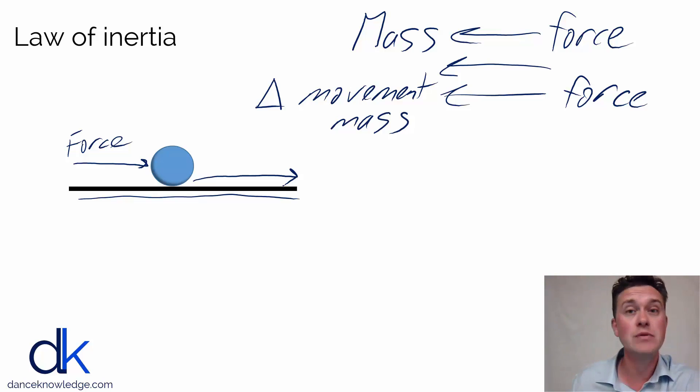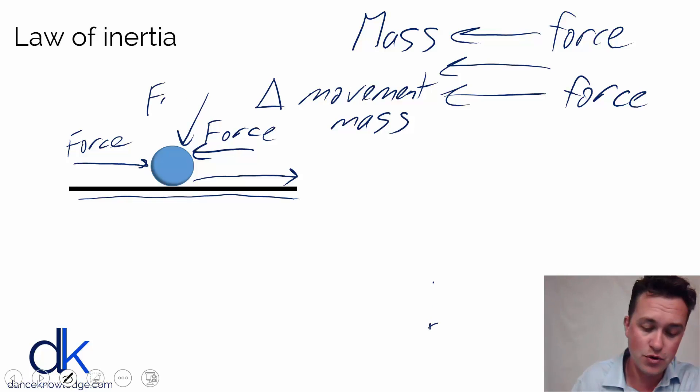So in order to stop the ball, we then need an opposing force, or we need another force that might go in the opposite direction. Or, if you could imagine in more of a three-dimensional space, we could have a side force that would move the ball off in another direction along the table and maybe push it off the side.